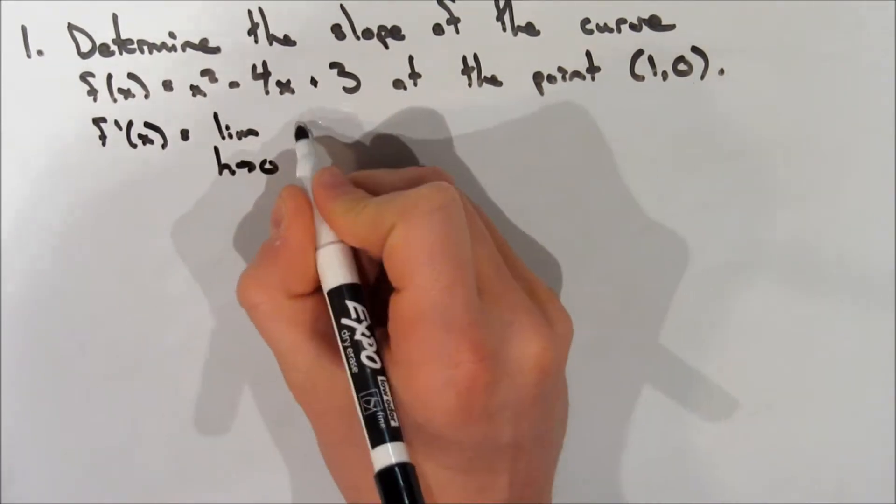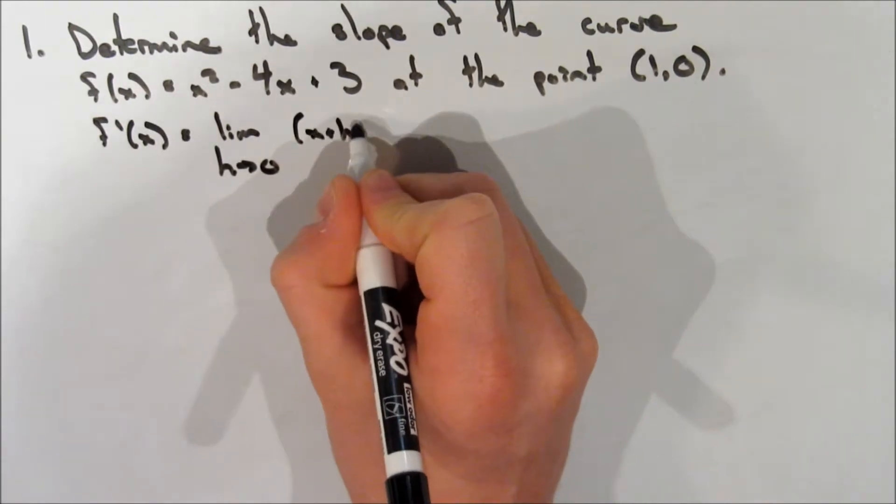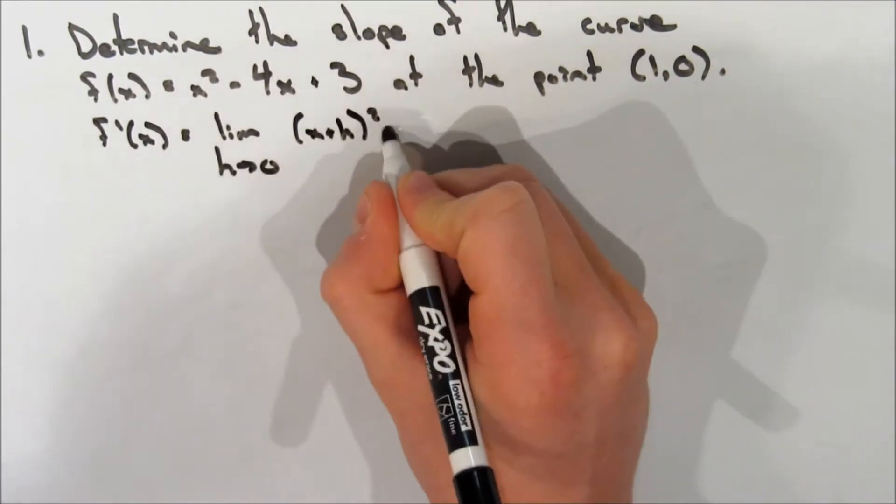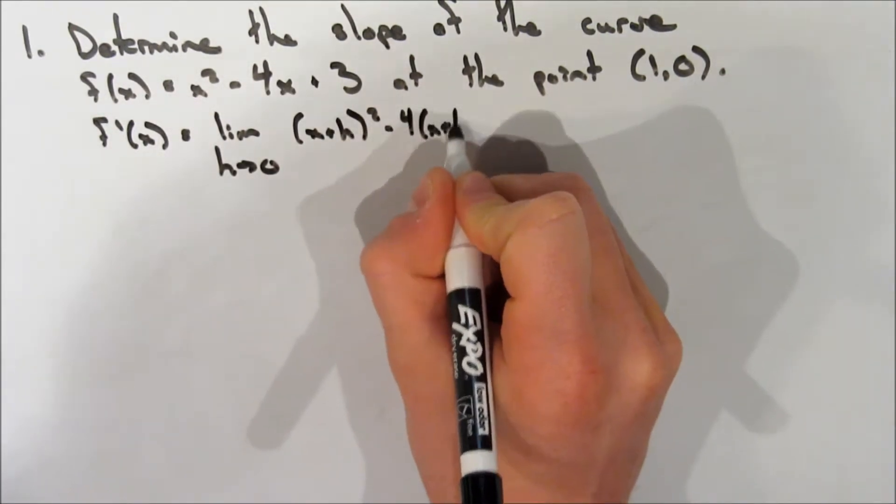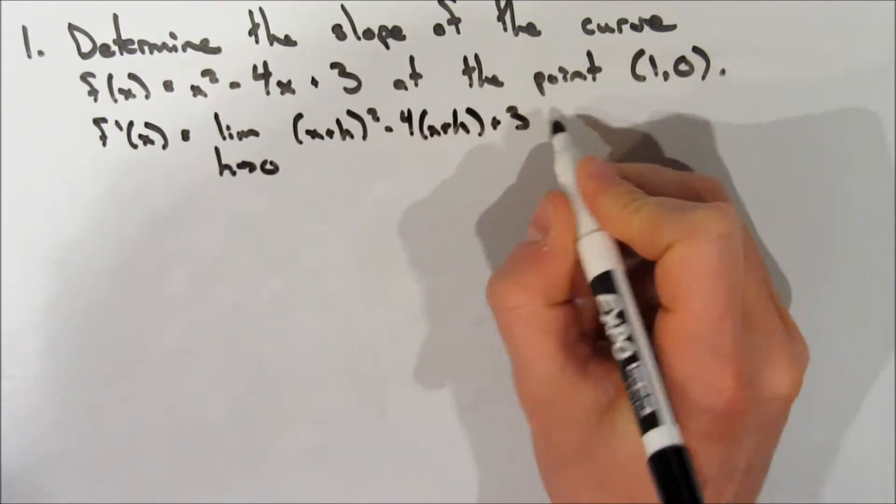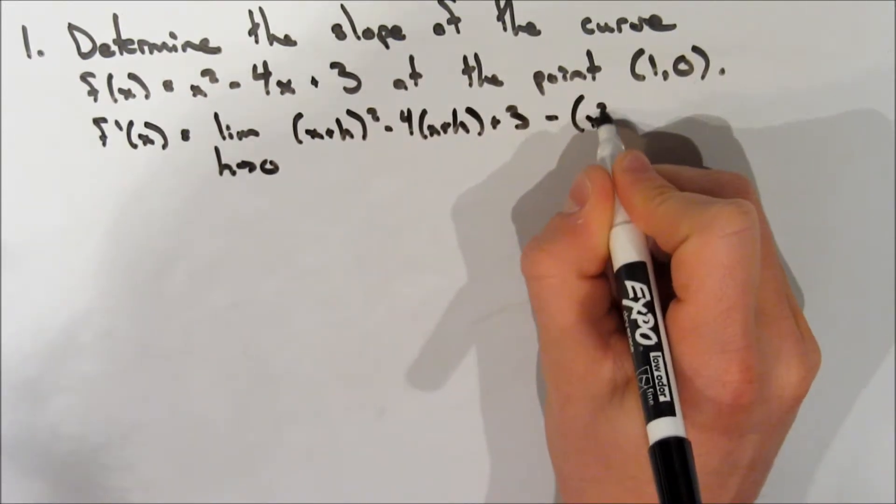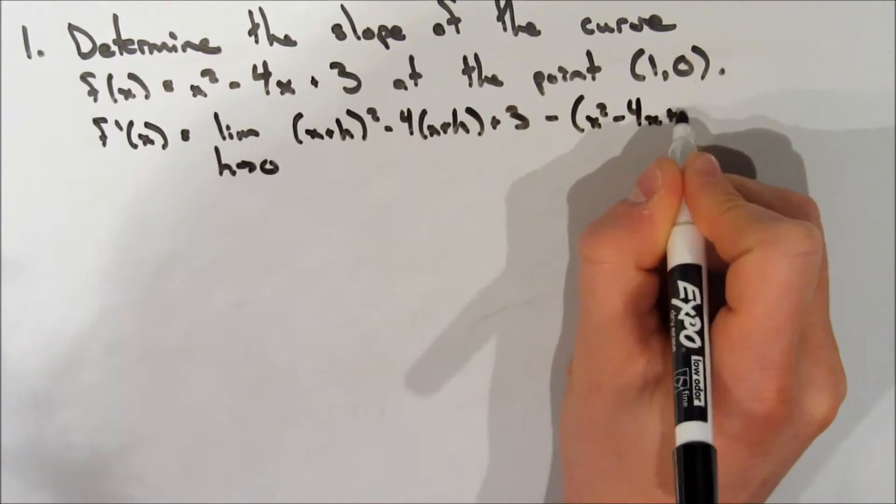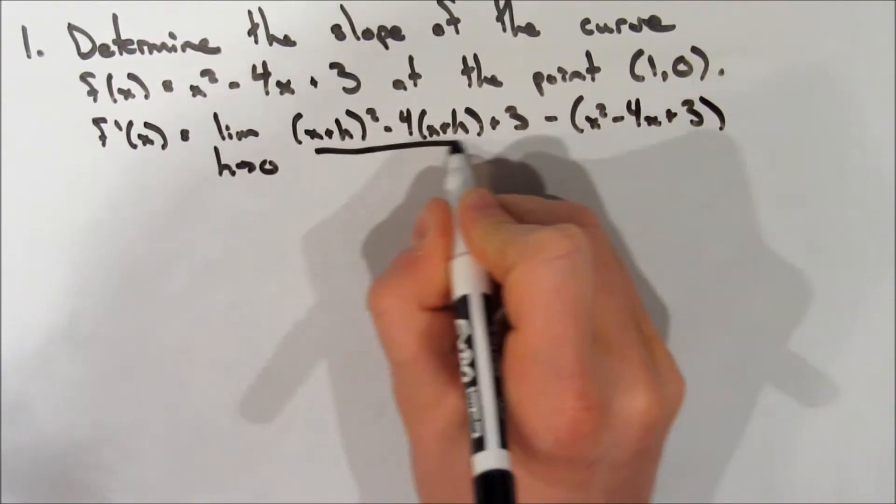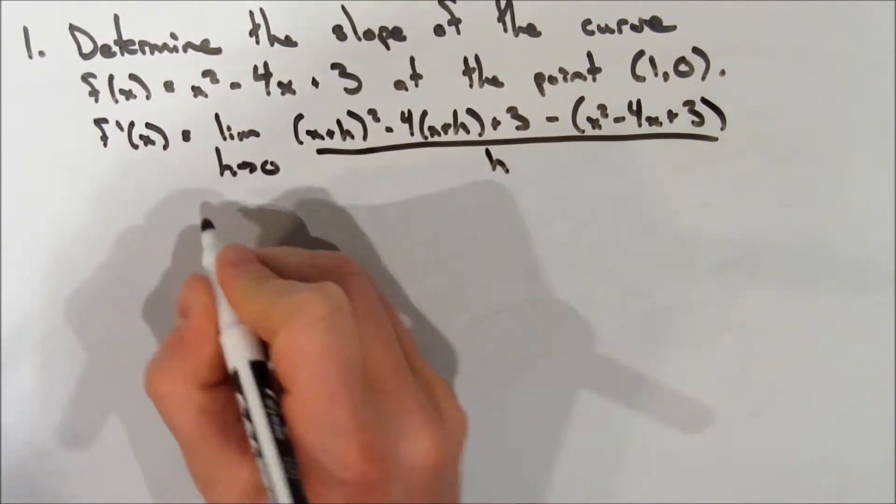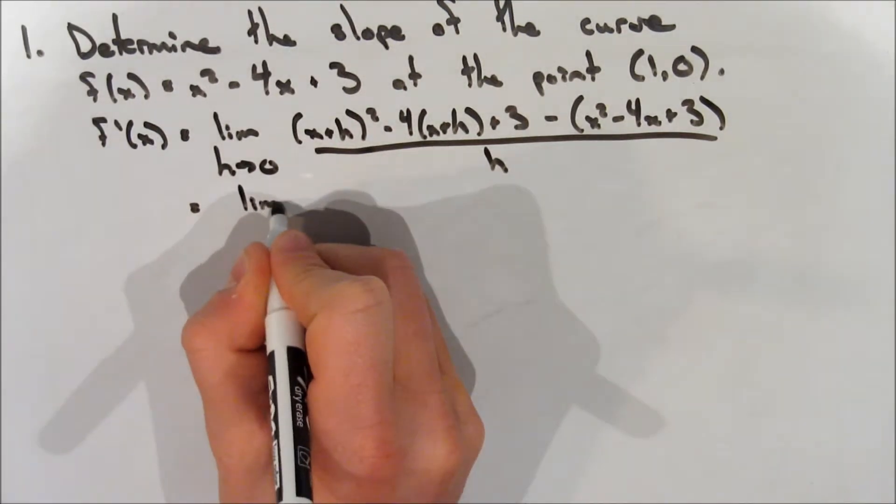So f prime of x is equal to the limit as h approaches 0. We're going to sub in x plus h everywhere where there's an x in the function, so (x plus h) squared minus 4(x plus h) plus 3, then we're going to subtract the function, so x squared minus 4x plus 3, and all this is over h.